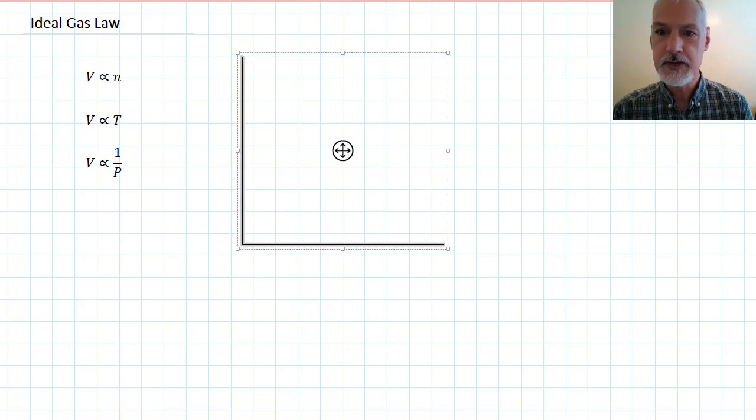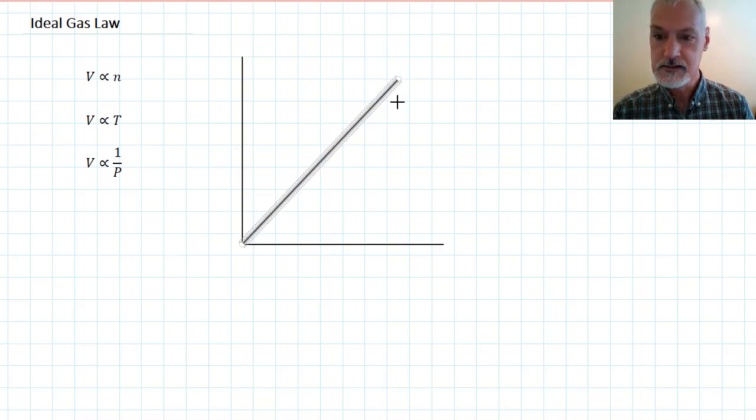Volume being proportional to the number of moles would give us a straight line, plotting on this axis the volume and this axis the number of moles. Volume is also proportional to temperature, so it would give a similar graph with temperature on the side here.